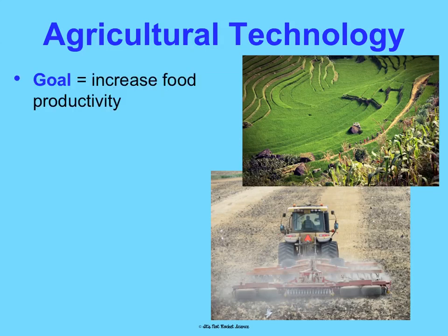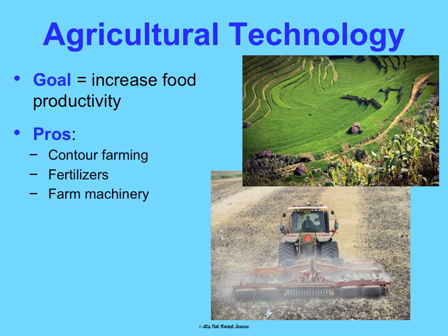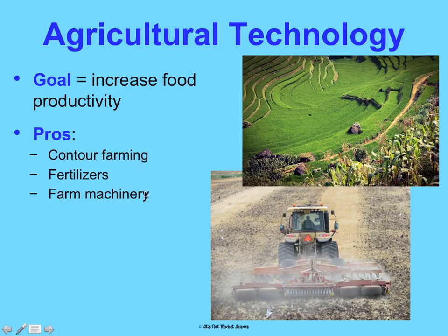First is agricultural technology. The goal is to increase food productivity — we want food faster and cheaper. The pros include contour farming, which you can see a picture of here, a technique that helps prevent erosion and keep the land reusable over and over again. Fertilizers help us grow the best crops, and farming machinery helps us make food a lot faster by plowing fields more efficiently.